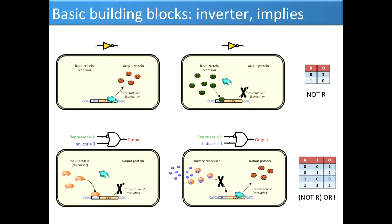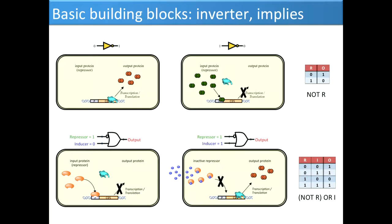I also defined another gate in my PhD — taking known operations and asking what logic function they implement. Now we have a repressor and also a small molecule inducer. If the repressor is there, there's no output protein. But if we add an inducer, it inactivates the repressor and allows expression of the output protein. This implements the 'implies' logic function — NOT repressor OR inducer. You can't go to Radio Shack and buy an implies logic gate, but it is useful for interfacing with a cell: the more inducer you add, the more gene expression you get.